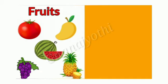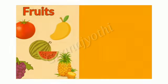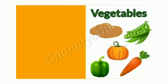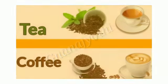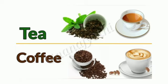Fruits such as tomato, mango, watermelon, grapes, and pineapple. Vegetables like potato, pea, pumpkin, capsicum, carrot, etc. We get tea from the tea plant and we get coffee from the coffee seeds.